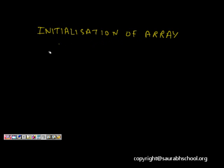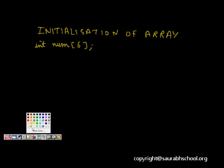Last time we saw that we defined arrays like int num[6], which means we have 6 integer variables indexed from 0 to 5. Memory is allocated for all of these in a static manner. Now we want to initialize — if we don't initialize, there might be some garbage values. Let's draw a memory map.